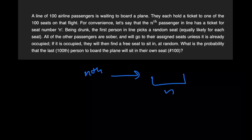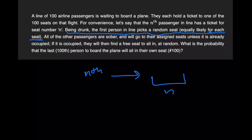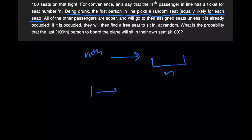But the problem is that being drunk, the first person in line picks a random seat — equally likely between 1 and 100. So let's say person number 1 sits on seat number 5. Now what happens is persons 2 through 4 sit on their own seats, but person number 5 now has to pick a random seat from all the remaining unoccupied seats.